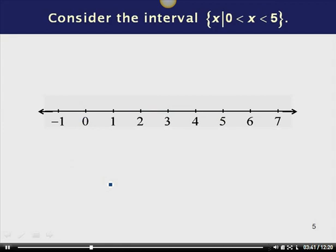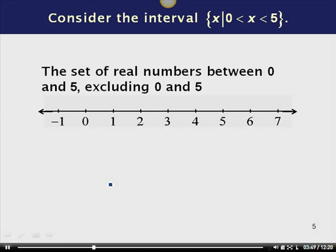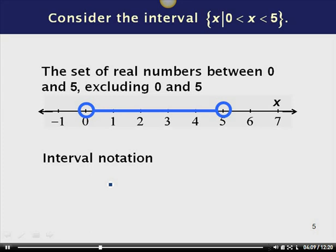Now let's consider the interval x such that 0 is less than x, which is less than 5. This is the set of real numbers between 0 and 5, excluding both 0 and 5. To graph this, I put x on the number line with an open circle at 0 and an open circle at 5, since neither endpoint is included, then shade everything in between. In interval notation, we use parentheses on both sides: (0, 5).